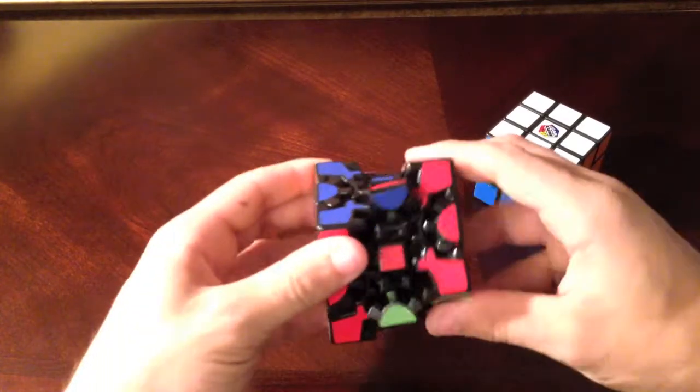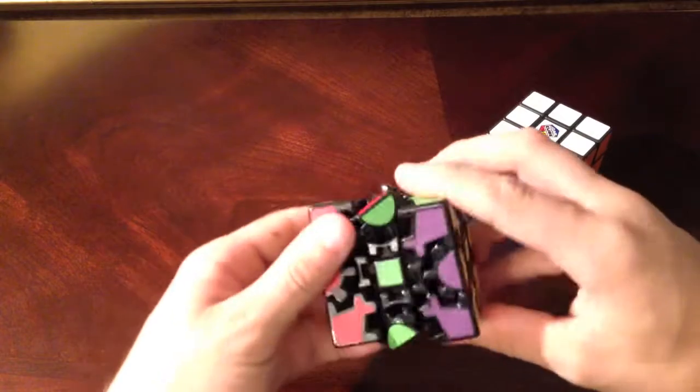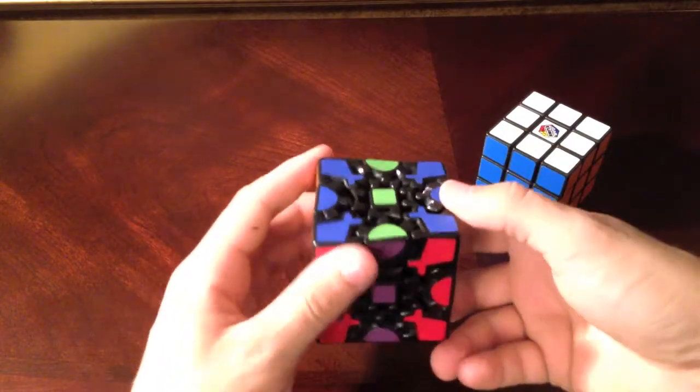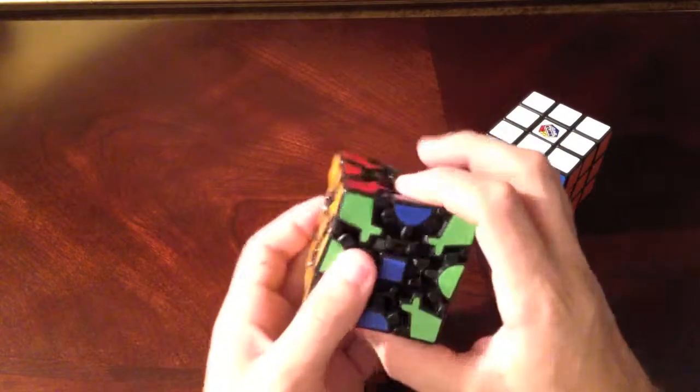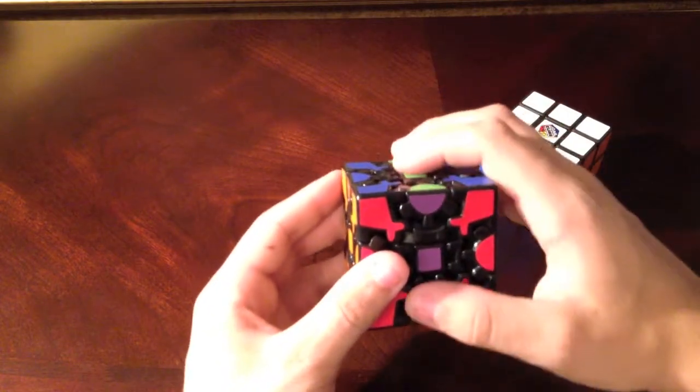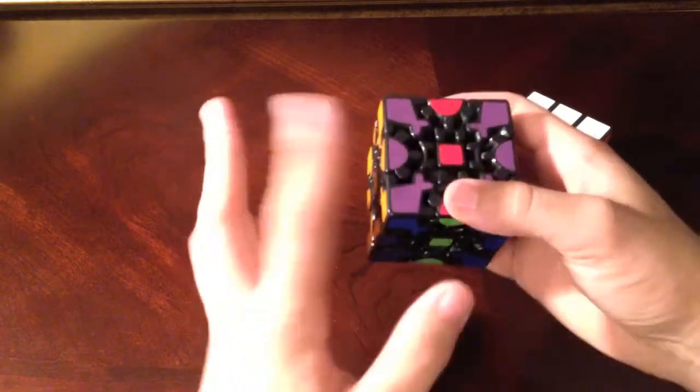As you can see, it's still not solved. I need to do a couple more turns. Here we are, now we are at three turns. As you can see, this middle layer here has done a 180 degrees and the edge pieces are all on the right angles.